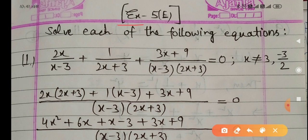Now see the questions of exercise 5E. First question: Solve each of the following equations. The first equation is 2x upon (x minus 3) plus 1 upon (2x plus 3) plus (3x plus 9) upon (x minus 3)(2x plus 3) is equal to 0. The condition given is x is not equal to 3 comma minus 3 upon 2.